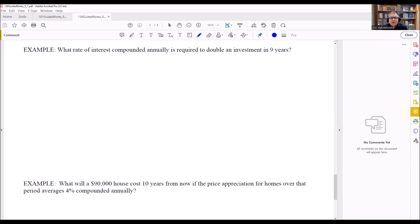So we have here, what rate of interest compounded annually is required to double an investment in nine years? All right, so this problem, we are still going to be using the compound interest formula, which is this one right here.